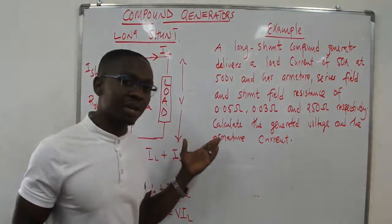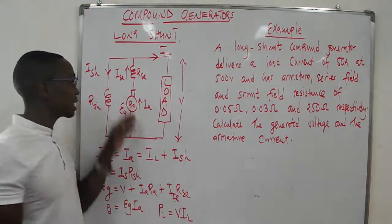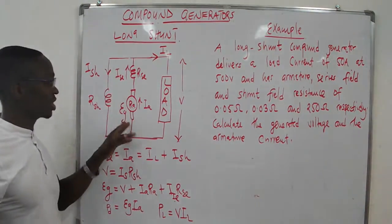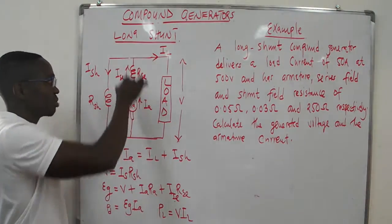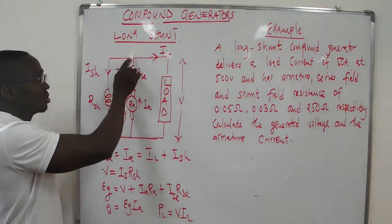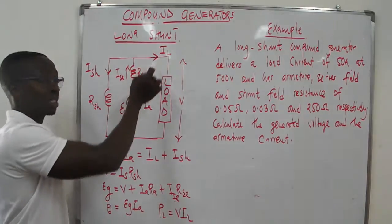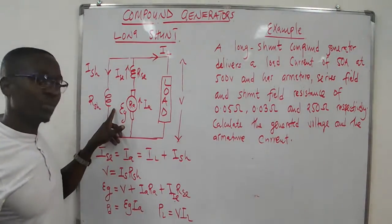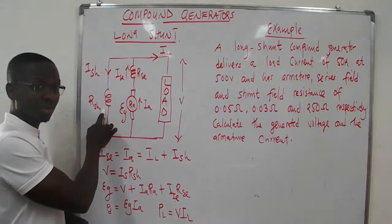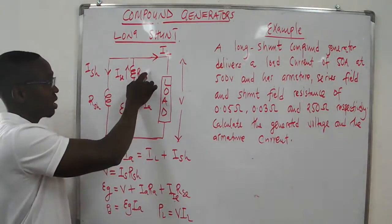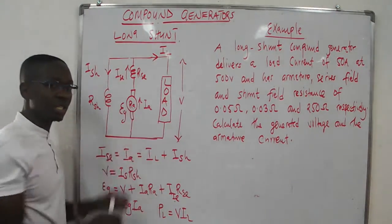In a long shunt generator — a compound generator — there is a series winding which is connected in series with the armature. When current is generated in the armature it passes through the series winding. At a node it splits: one part goes to the load as load current, and the other goes to the shunt as shunt current. You have several resistors: RSH at the shunt, RSE which is the resistance of the series winding, and RA which is the resistance of the armature.